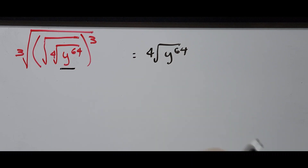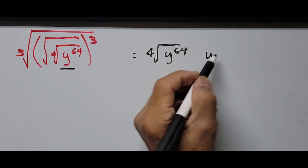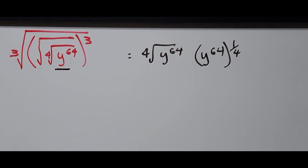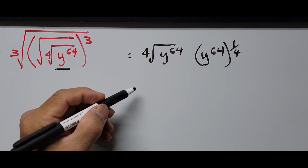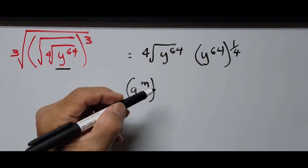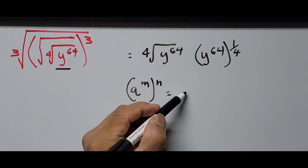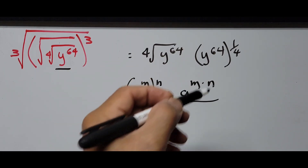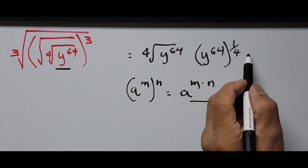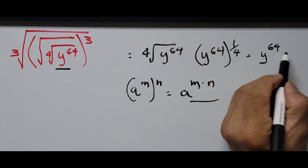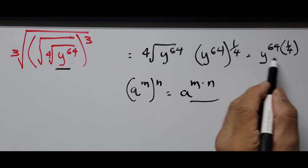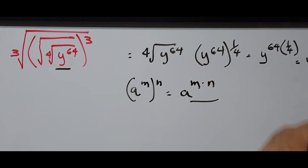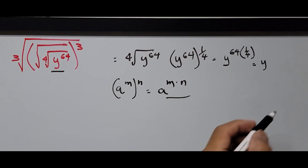This is also written as y to the 64 raised to the 1/4 power. To further simplify this, we have a power rule: a to the exponent m raised to exponent n equals a raised to m multiplied by n. So y to the 64th raised to the 1/4 power becomes y raised to 64 times 1/4, which is 64 divided by 4, giving us y raised to the 16th power.